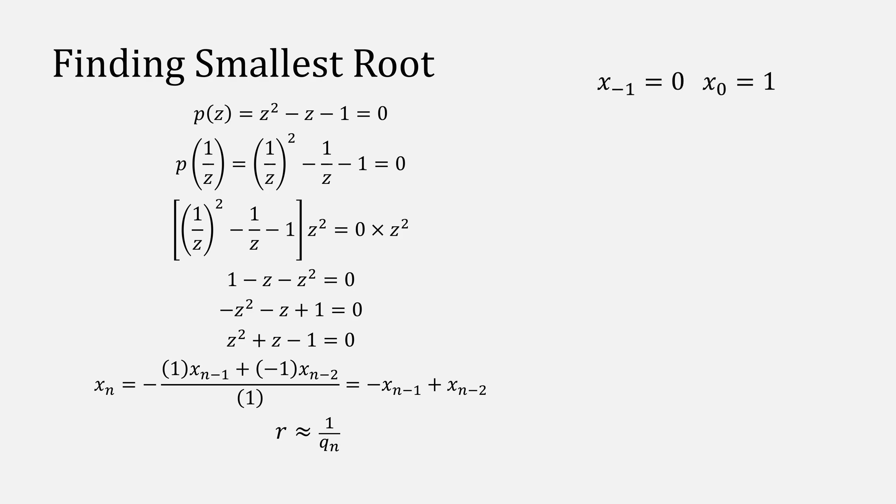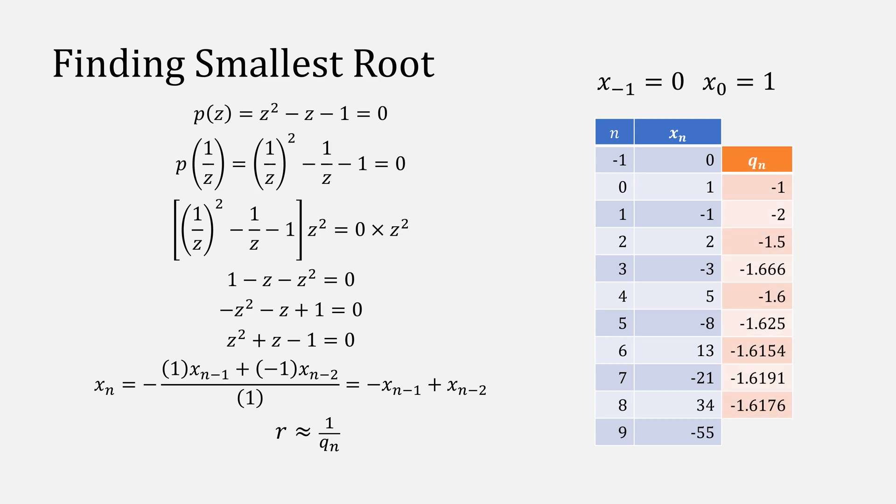Starting from the numbers 0 and 1, here are the results that we get. And our quotient ends up being negative 1.618, which we then invert here to give us negative 0.618. And that's our answer.